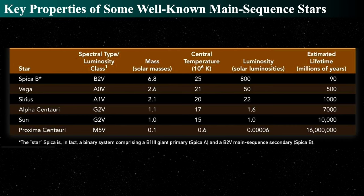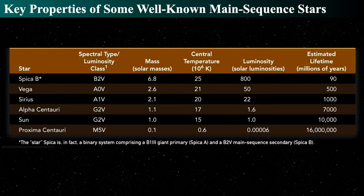Going from Vega to Sirius, the mass drops by only about half a solar mass. The central temperature doesn't drop much, but luminosity drops by a factor of two and estimated lifespan jumps by a factor of two. Alpha Centauri is about 1.6 times the sun's luminosity and slightly more massive, so its lifespan will be shorter. The sun's total lifespan is about 10 billion years. Proxima Centauri, an M-type dwarf with about a tenth the mass of the sun, has a luminosity of about six-thousandths of one percent of the sun's — and will live about 16 trillion years.